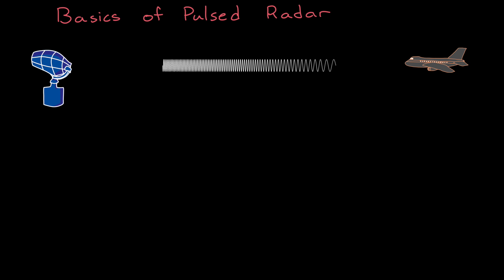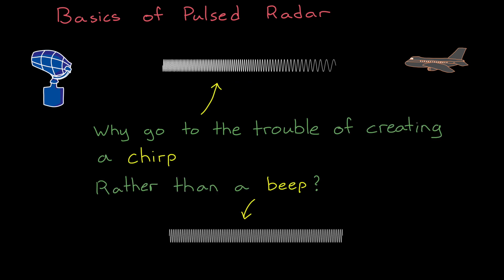Now, from a hardware perspective, there is more complexity in creating a frequency modulated pulse than there is in a simple rectangular one. So the question I want to answer in this video is, why go through the trouble of creating a chirp rather than just a beep?